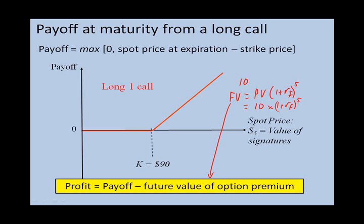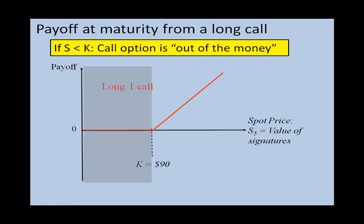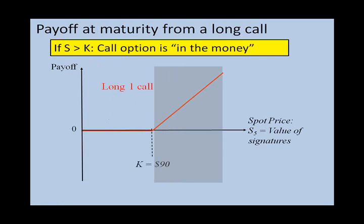When we're long a call, we have some additional terminology. If the value of the football is less than the strike price — less than ninety dollars — the call option is said to be out of the money. At contract initiation Scott paid fifty dollars for the ball, so Chad has purchased an out-of-the-money call option because fifty dollars is less than the ninety dollar strike price. If the football was worth ninety dollars today we'd say the option is at the money. If it was worth more than ninety dollars today we'd say the option is in the money.